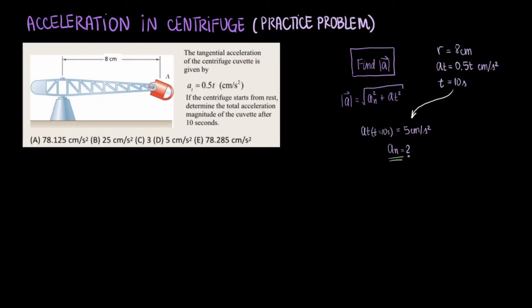You may remember that the normal component can be found by dividing the tangential component of the velocity squared by the radius of the curvature. We have the radius of the curvature, just not the tangential component of the velocity. But we do have the tangential component of the acceleration.